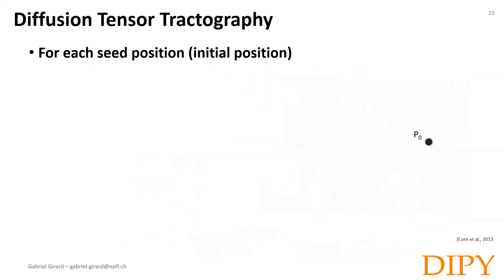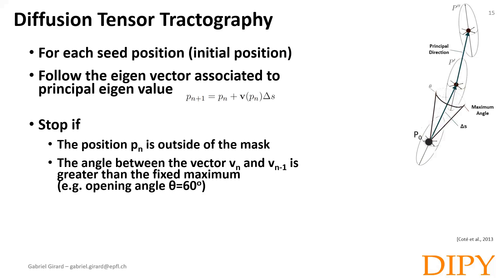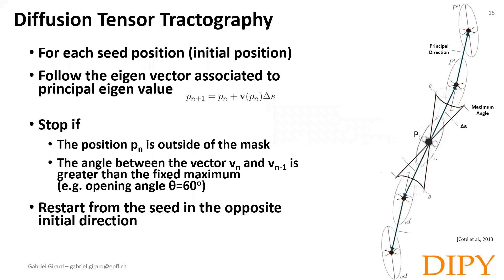To perform tractography with the diffusion tensor, we first define the initial position. Then we iteratively follow the orientation of the eigenvector associated with the principal eigenvalue of the tensor. We stop when Pn is outside the tracking mask or if the angle between two consecutive vectors is greater than a maximum value — here, for instance, 60 degrees. When the tractography stops, we go back to the initial position and start the same process in the opposite direction to form the complete streamline.